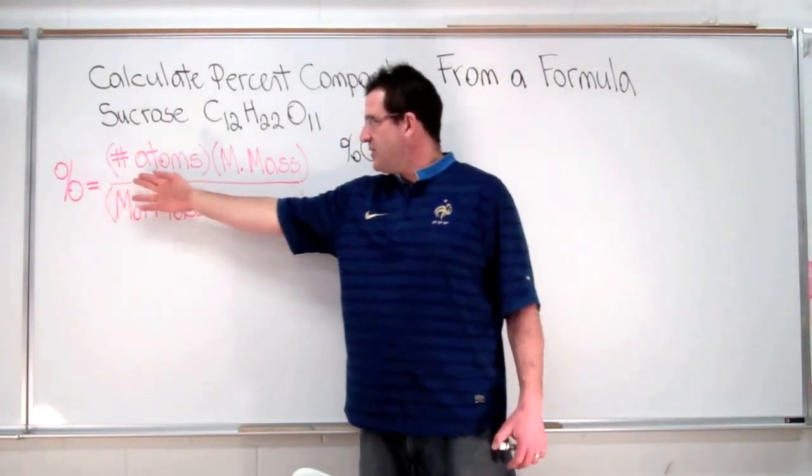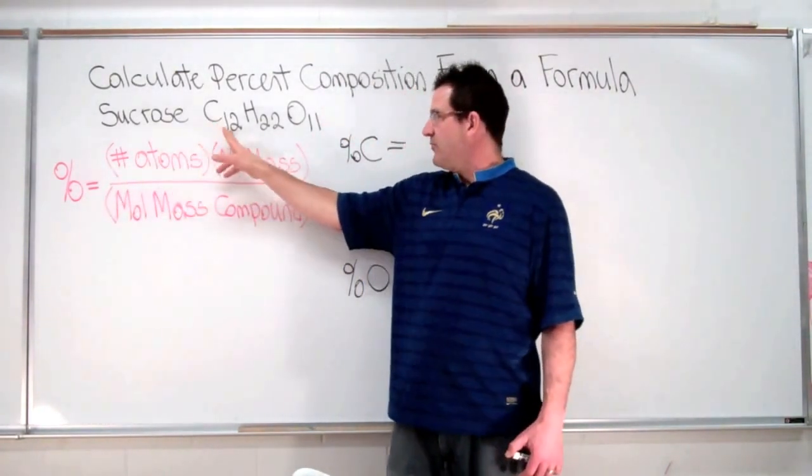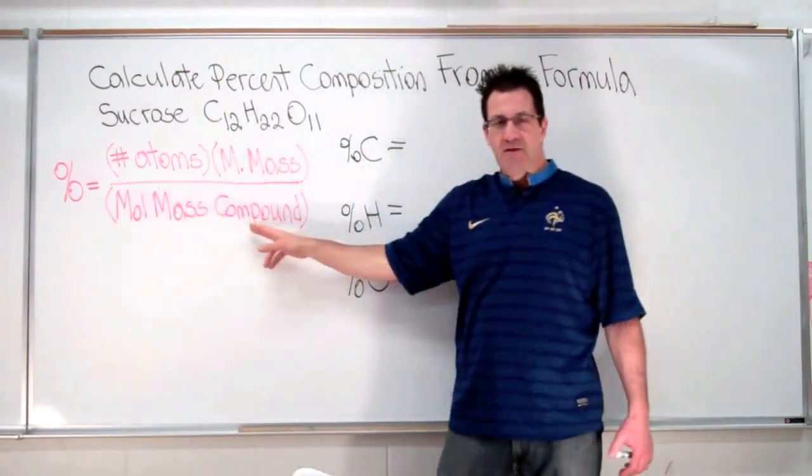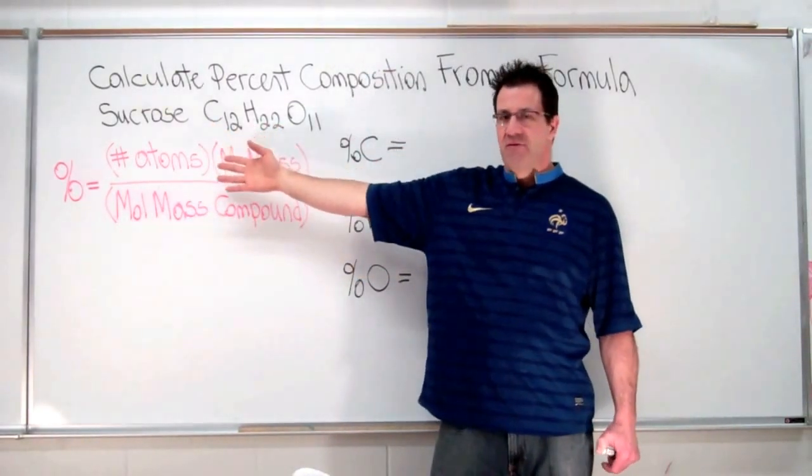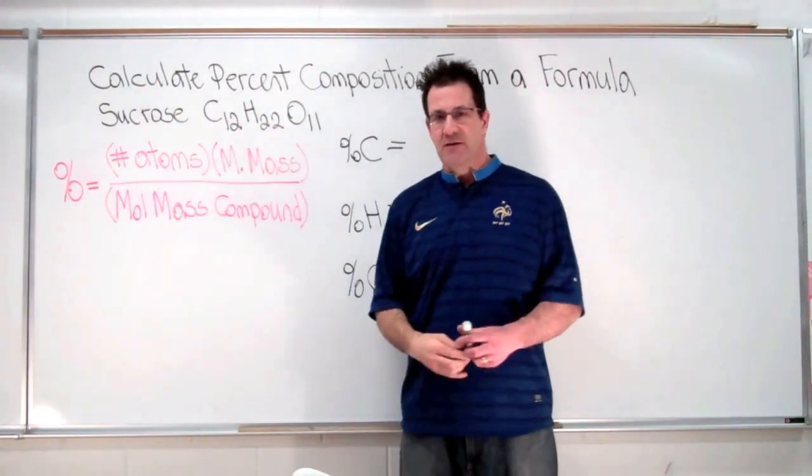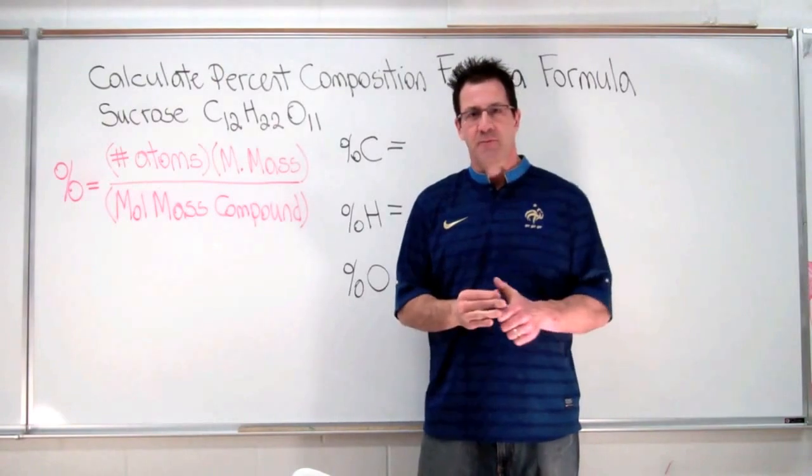To get the percent composition, we're going to take the number of atoms, so for example 12, times the molar mass of carbon, divided by the molar mass of the entire compound. If we use that formula, then we can calculate the percent composition for each of the elements that we have in our chemical formula. Alright, so let's get started.